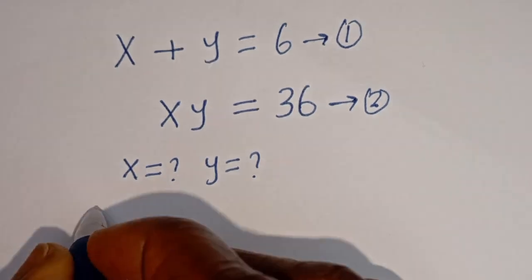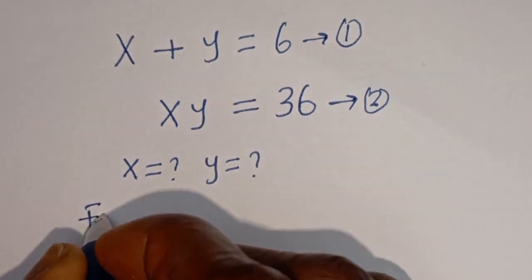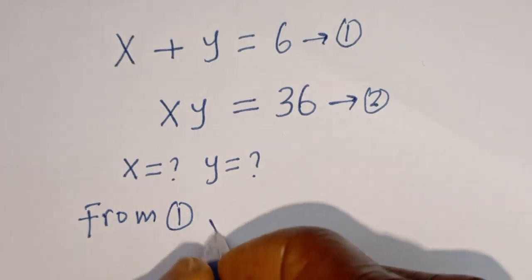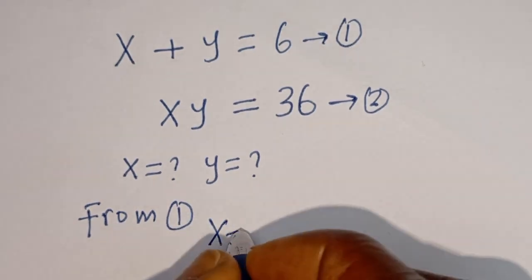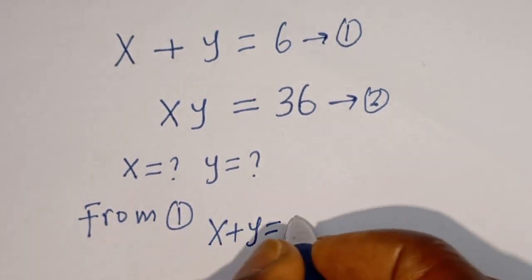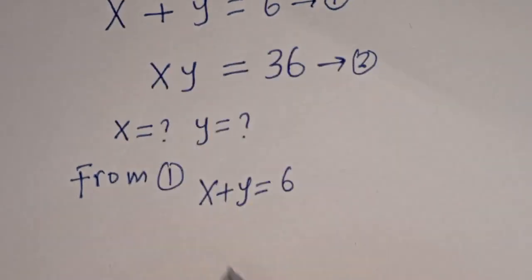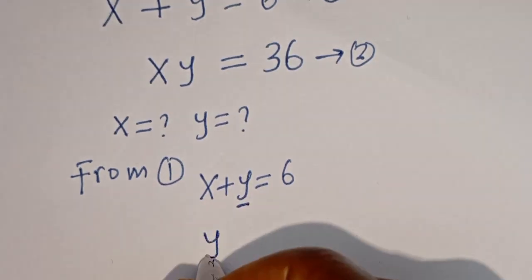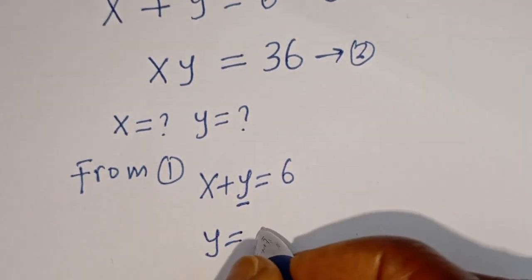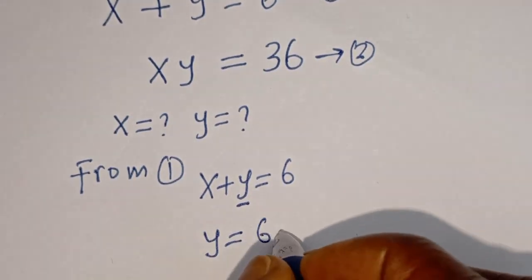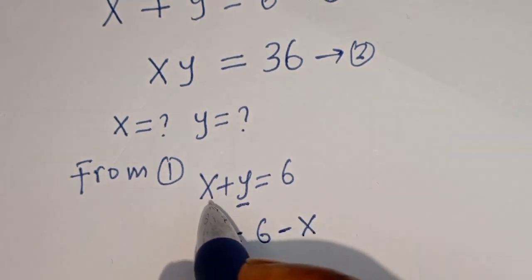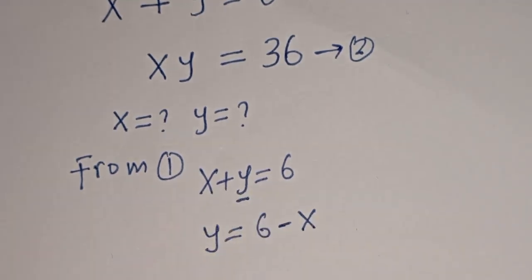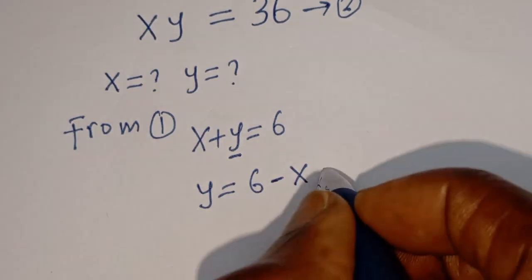From equation 1, s plus y equal to 6, we can make y the subject of the formula: y is equal to 6 minus s. You may also make s the subject of the formula if you want. Let's call this equation 3.